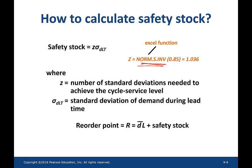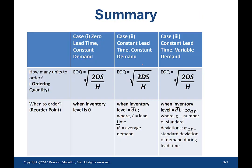Z value is the inverse of the standard normal cumulative distribution for a given service level. Basically, the ordering quantity never changes from case to case. The only thing that changes is the reorder point at which the buyer places an order. In case 2, when the inventory level is equal to L times D, the buyer places an order. However, in case 3, due to variability in demand, the reorder point increases by an amount called safety stock, which is defined by Z times the standard deviation during the lead time.